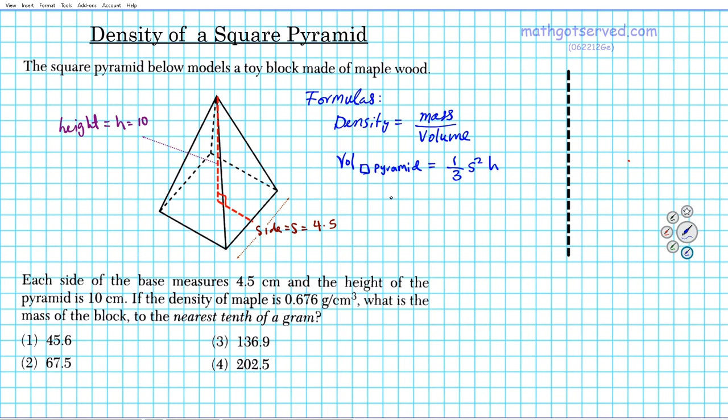So what we're going to do first is find the volume of the pyramid since the density value depends on that, and then we're going to set up an equation and use it to find what we need to find.